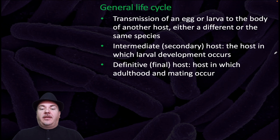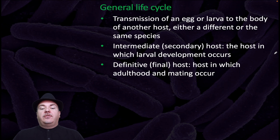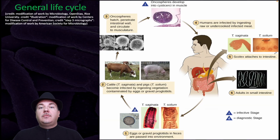The general life cycle of the Helminths is transmission of an egg or larva to the body of another host, either a different or same species. Then you can have an intermediate or secondary host — the host in which larval development occurs. And then you have the final or definitive host, the host in which adulthood and mating occurs.